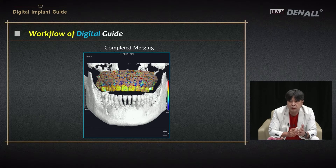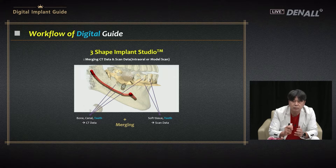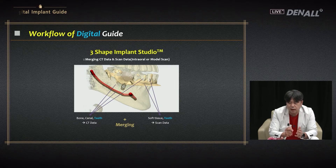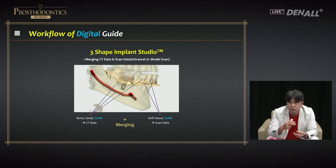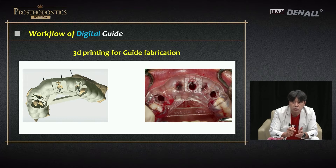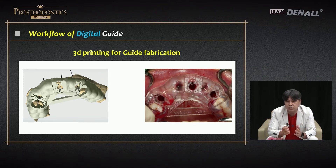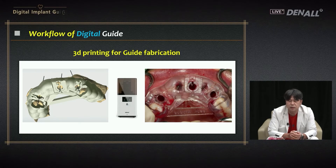Once the data is merged, a crown can be designed in advance. Based on that crown, implant size, depth, and position can be determined. To reproduce the implant design, a surgical guide is designed, and that needs to be fabricated physically — it is printed out as a surgical guide using the 3D printer, which was discussed in the last lecture.